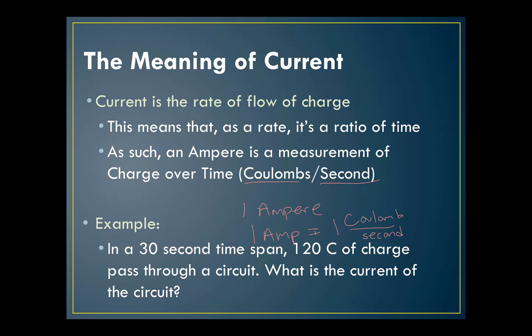For example, if we were to calculate the current in this particular problem, in 30 seconds, so time is 30 seconds, 120 coulombs, so charge Q equals 120 coulombs, pass through the circuit. What is the current? Current is charge per time. So we do our 120 coulombs of charge divided by 30 seconds of time, and that would give me a current of 4, and the units would be amperes. So 4 amperes, or 4 amps, of electrical current.